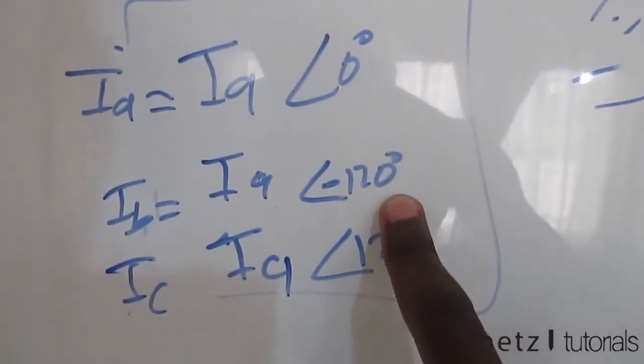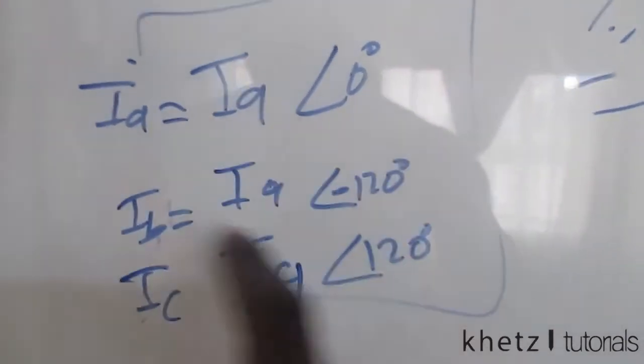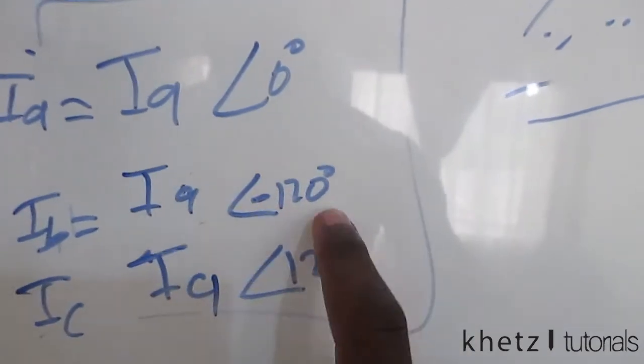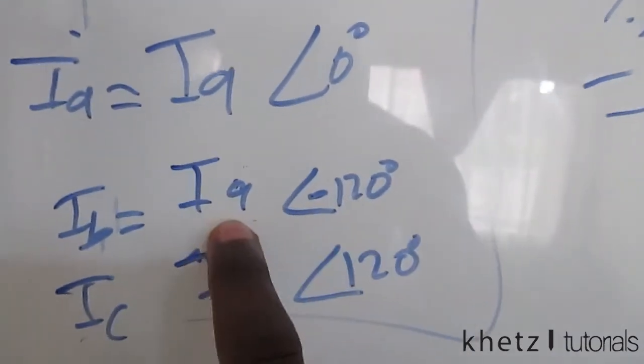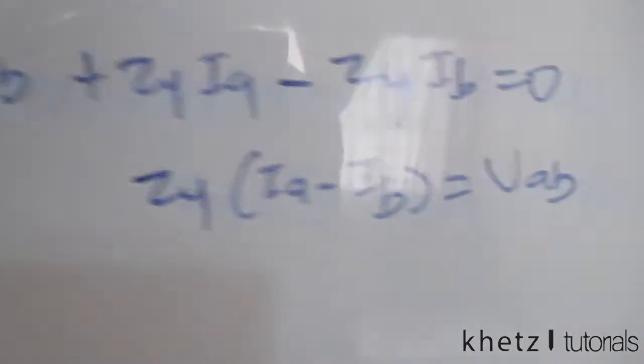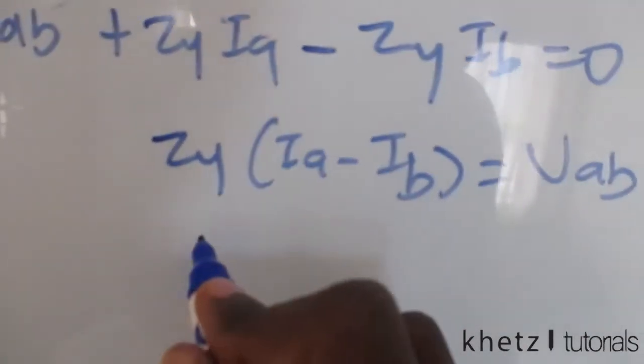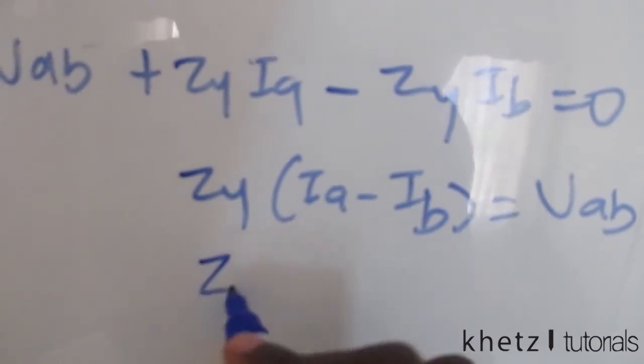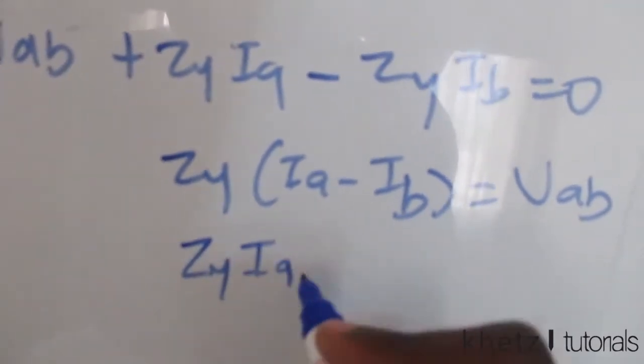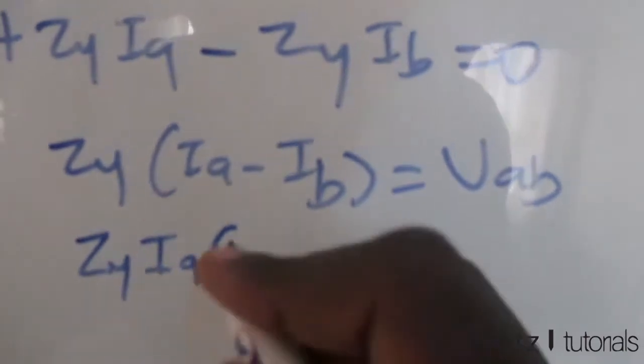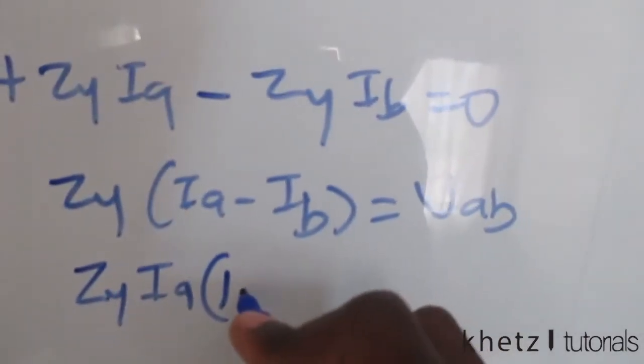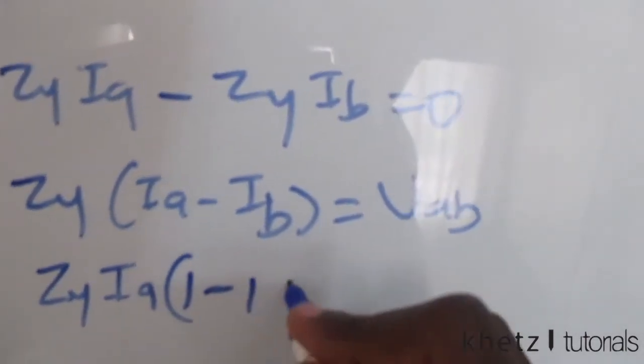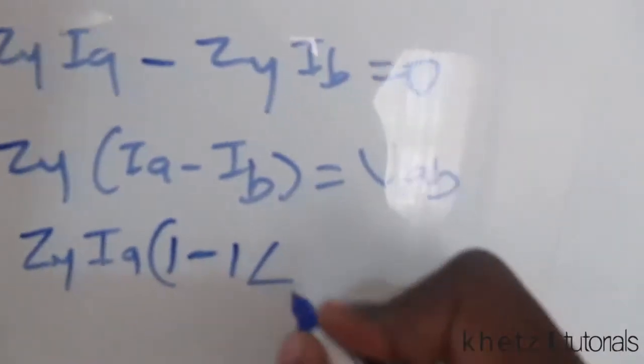But I just showed you that IB—the angle of IB is 120 degrees less, but it has the same magnitude. So here you can just say this is equivalent to Zy·IA multiplied by (1 - 1∠-120°).